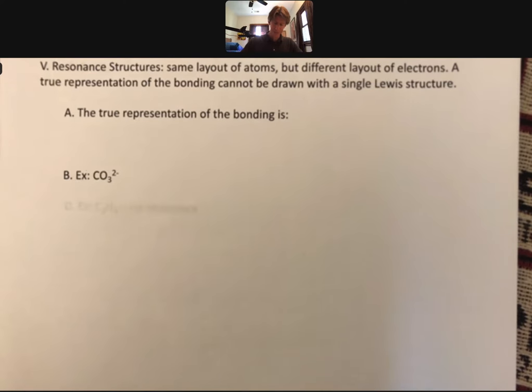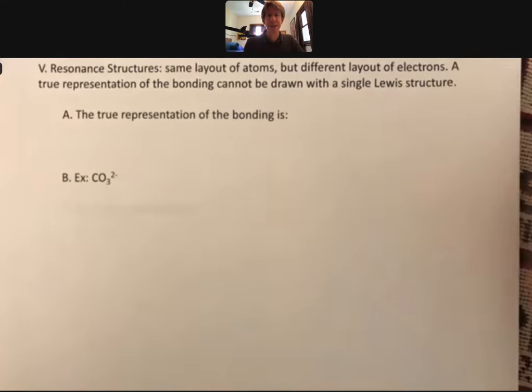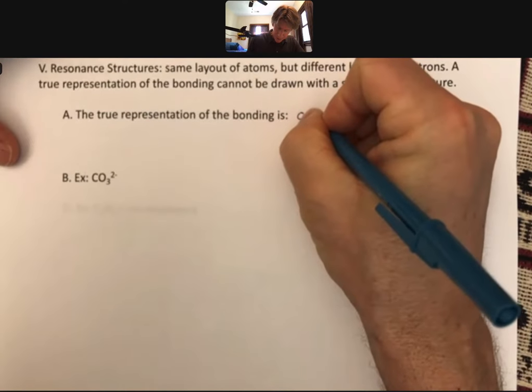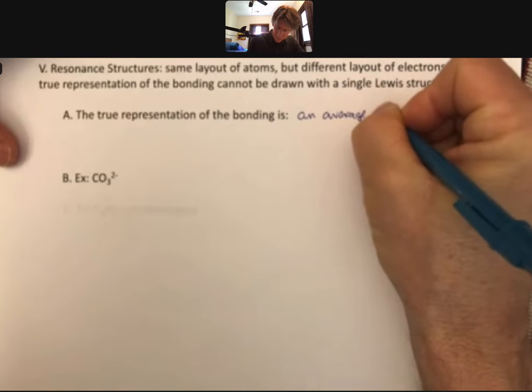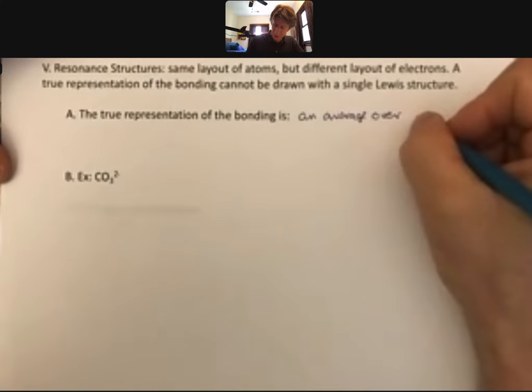Let me show you what I mean. The true representation of the bonding is an average over all Lewis structures, or all resonant structures.